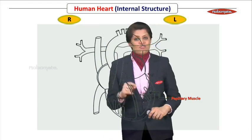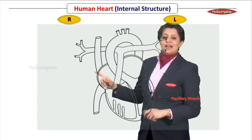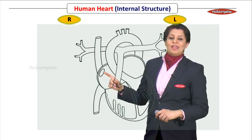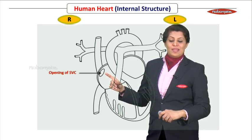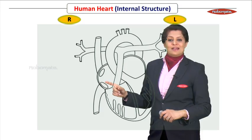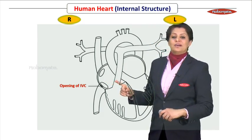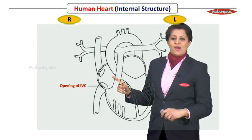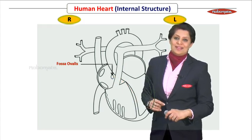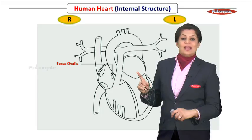Starting with the right atrium: you need to draw the opening of the superior vena cava. Similarly, draw the opening of the inferior vena cava also. And in the right atrium, observe a depression — this depression is called the fossa ovalis.